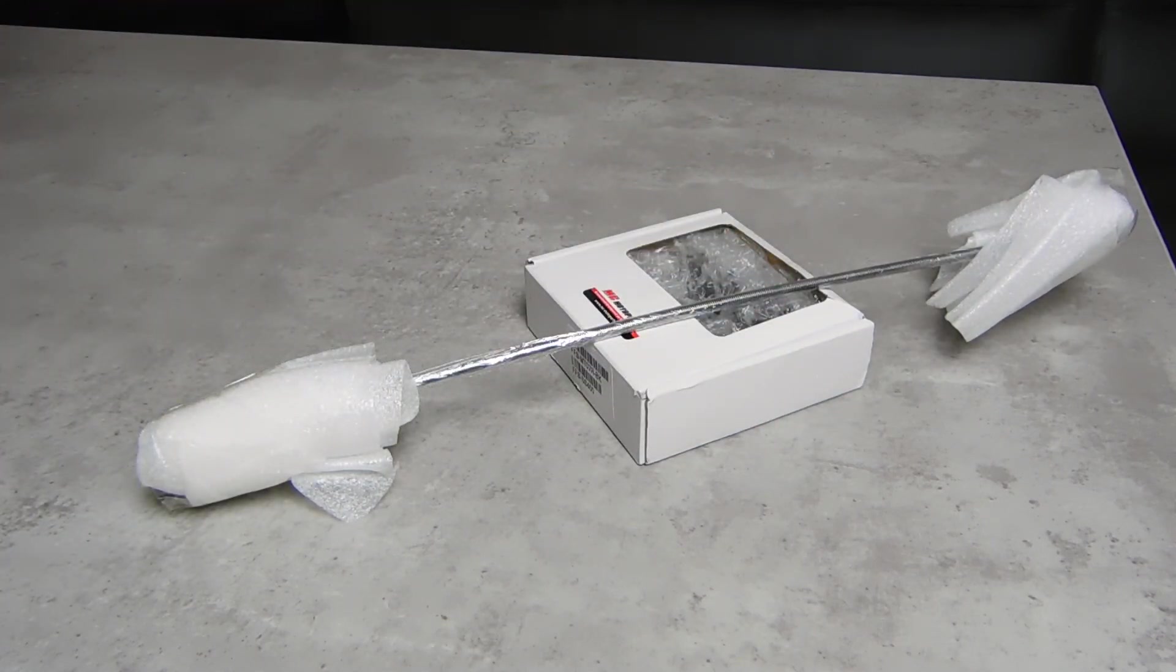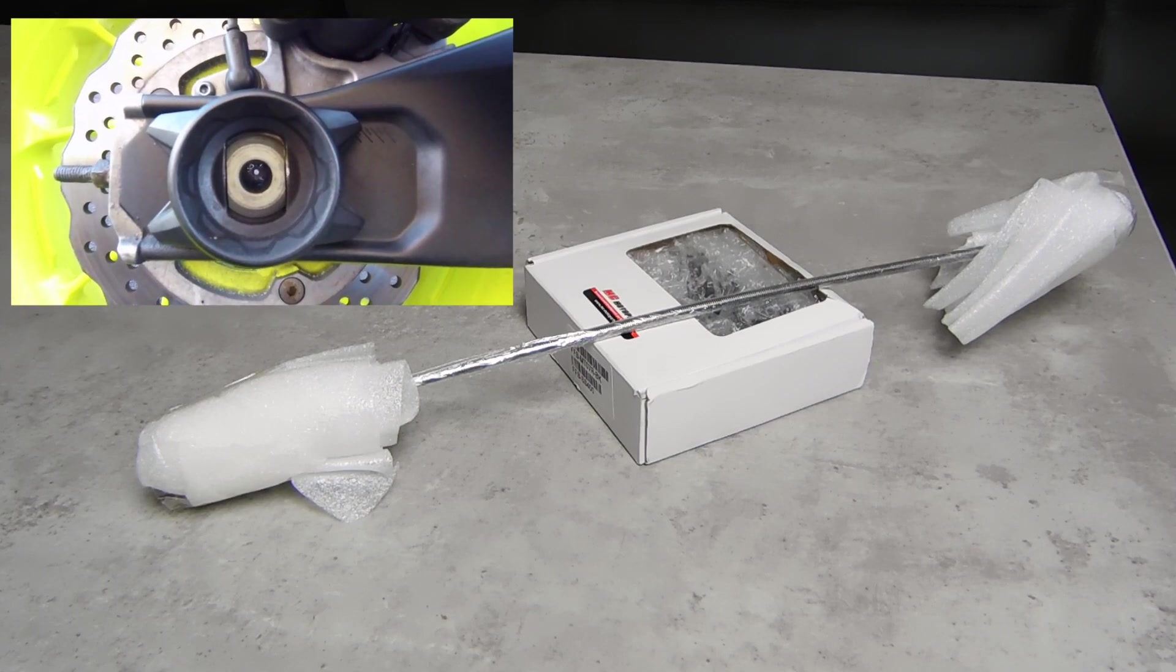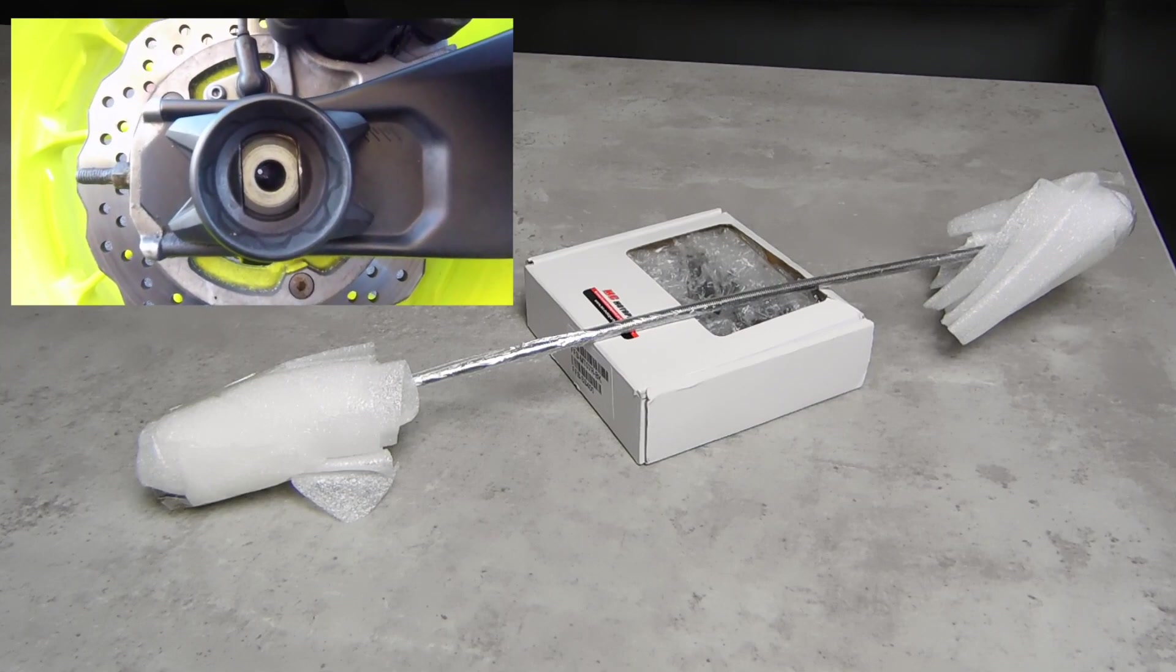Now these are for the Yamaha MT07. They do make them for many other bikes as well. But just before you buy them, you're going to want to check that your motorcycle has the hollow axles, both front and back. Most modern bikes have this; some older models might not. So just double check you have these before you go shopping for these parts.